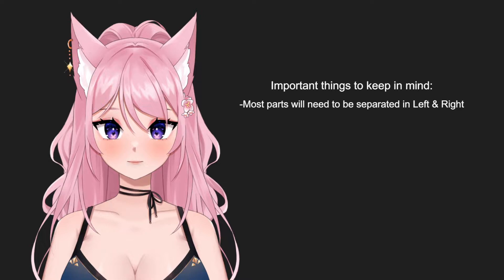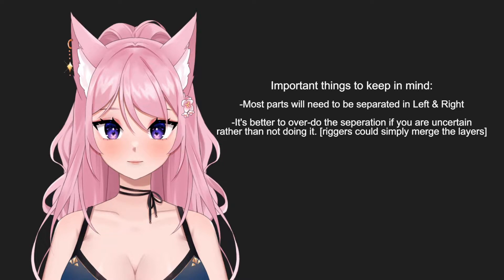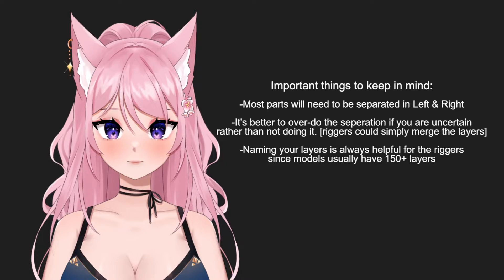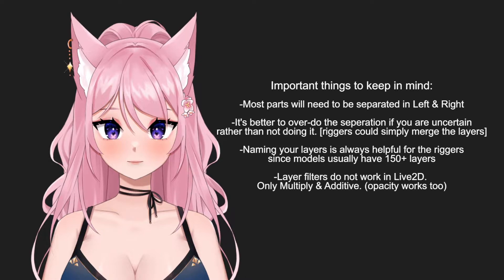Some important things to keep in mind: most parts will need to be separated into left and right. It's better to overdo the separation rather than not doing it at all if you are uncertain, since later on riggers could simply merge the layers. Naming your layers is always helpful for riggers, since models usually have 100 plus layers — it will help them a lot.